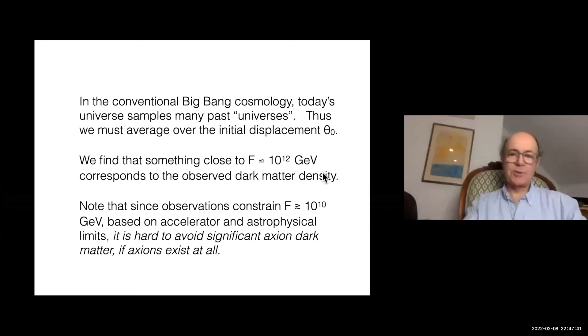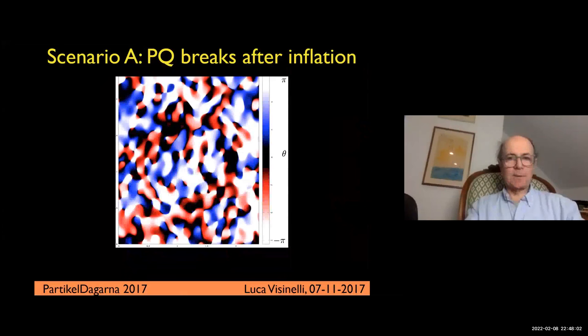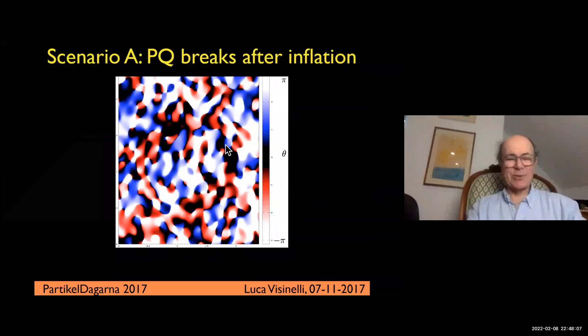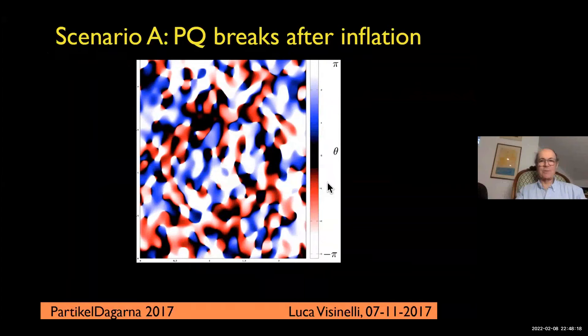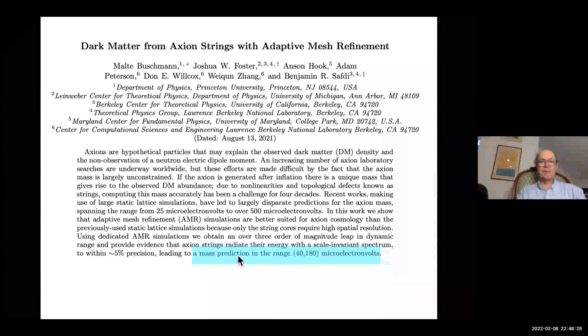Here you need 10 to the 12th GeV to make the dark matter. So if axions exist at all, the constraints tell you pretty much they have to be the dark matter. If we're going to solve the strong CP problem, we're pretty much forced to the idea that axions provide a lot, and maybe all, of the dark matter. This is a picture intended to illustrate that in the early universe, you had many different initial values of theta.